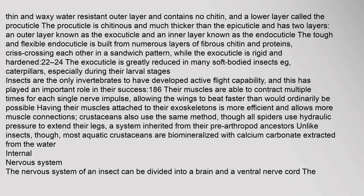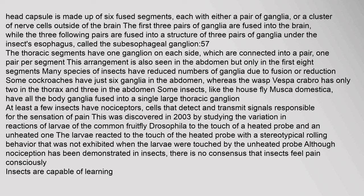The nervous system of an insect can be divided into a brain and a ventral nerve cord. The head capsule is made up of six fused segments, each with either a pair of ganglia or a cluster of nerve cells outside of the brain. The first three pairs of ganglia are fused into the brain, while the three following pairs are fused into a structure called the subesophageal ganglion. The thoracic segments have one ganglion on each side, connected into a pair per segment. Many species have reduced numbers of ganglia due to fusion; some cockroaches have just six ganglia in the abdomen, whereas the wasp Vespa crabro has only two in the thorax and three in the abdomen.